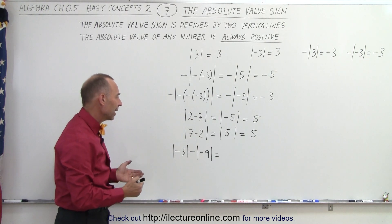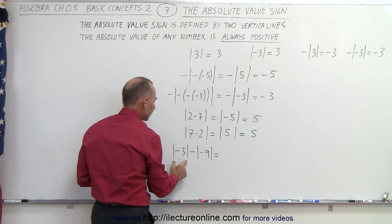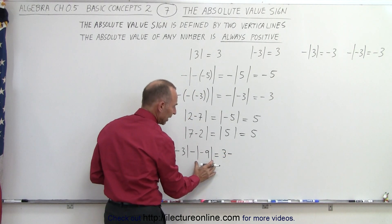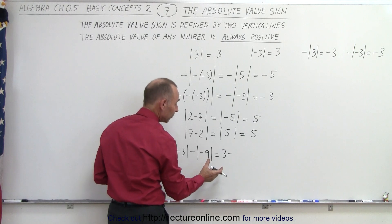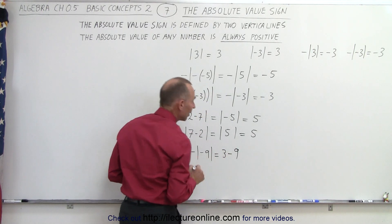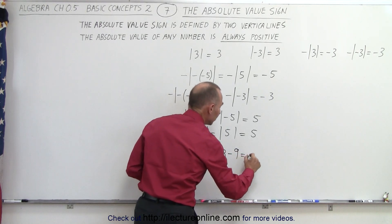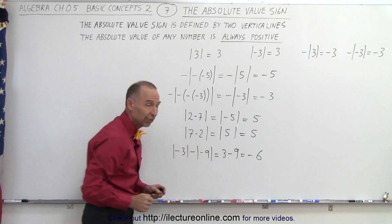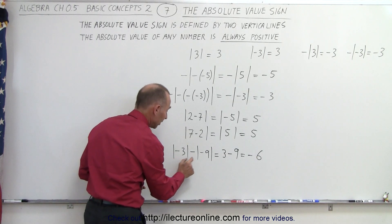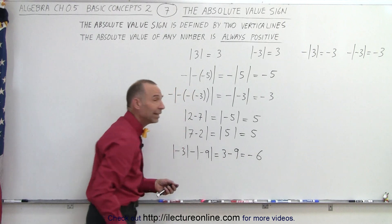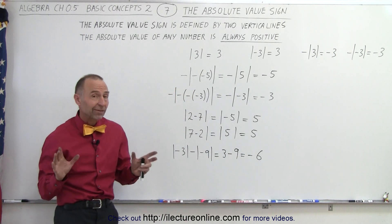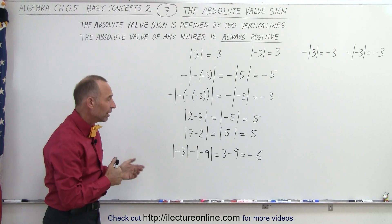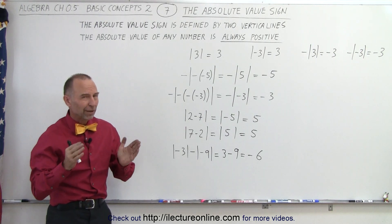What if we have something like this? You work each part out separately. The absolute value of negative 3 is positive 3. We then subtract from that the result of the absolute value of negative 9, which is positive 9 — so we subtract 9. And 3 minus 9 equals negative 6. So even though we have absolute value signs and we take the absolute value of two negative numbers giving us positive numbers, when we subtract positive 9 from positive 3, we still end up with a negative result. That is why we have to be careful when dealing with absolute value notation, because we could still end up with a negative number.